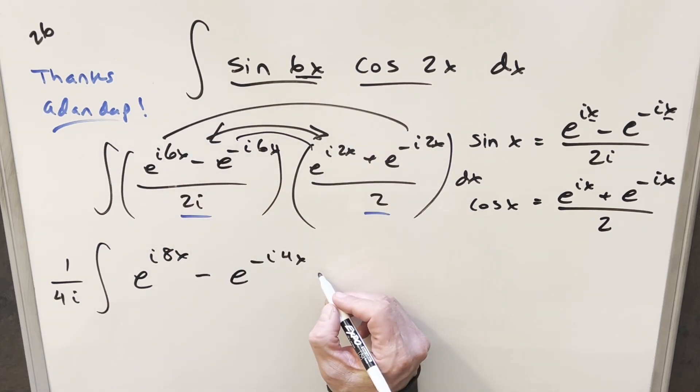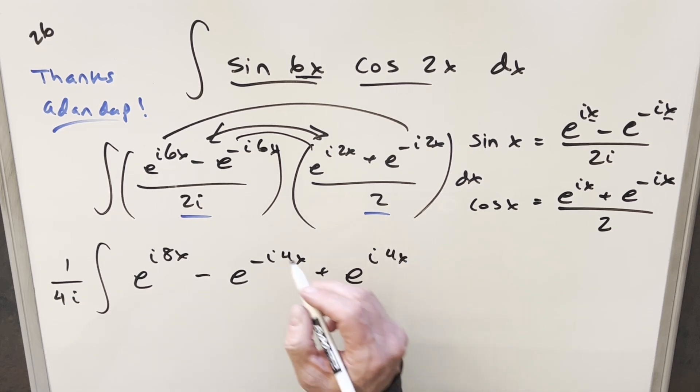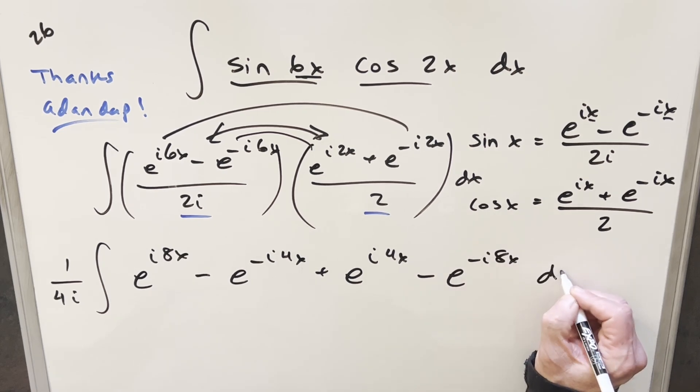Then for the outer terms, this is going to become plus e^(i4x) plus e^(-i4x) minus e^(-i8x) dx.